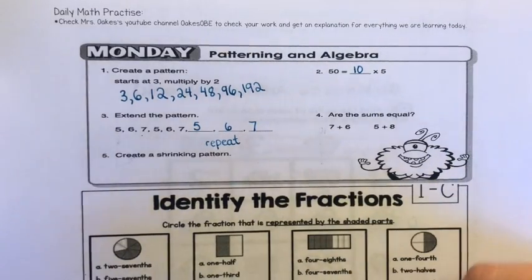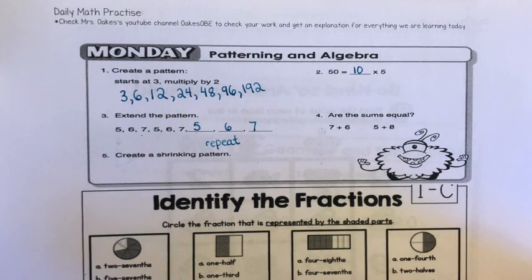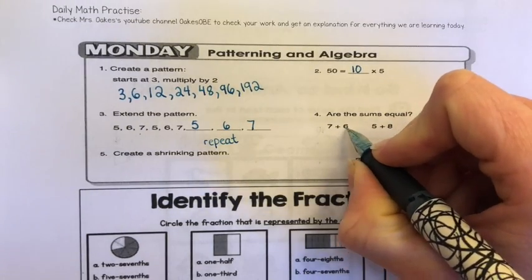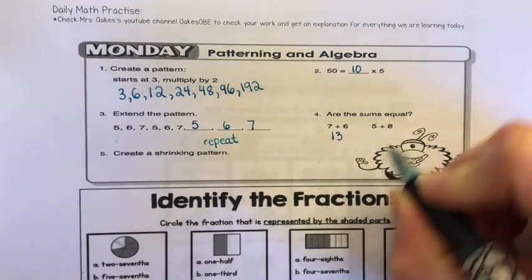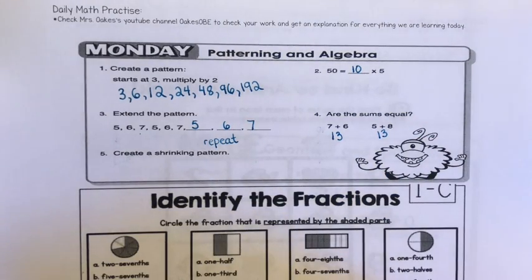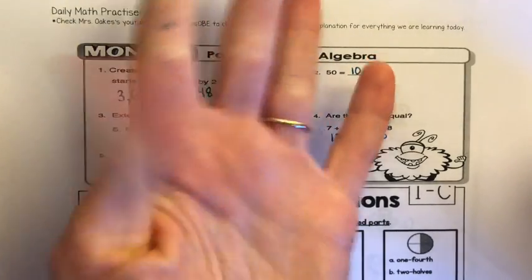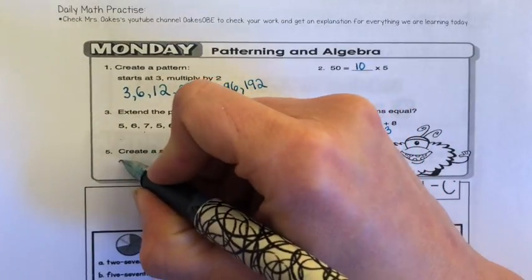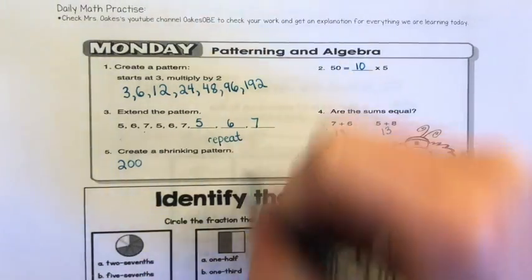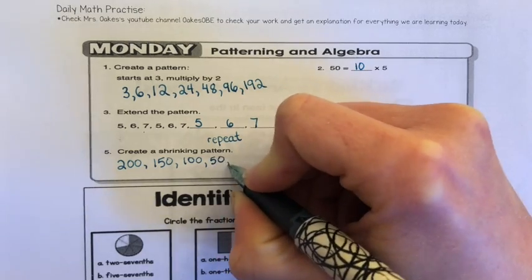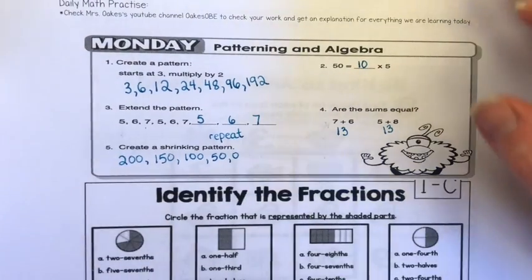I put something stickier underneath so it should hold my camera on top of the pile of books balanced on a pen. Hopefully it's less distracting. So are the sums equal? Seven plus six. Five plus eight. You could think five plus five and three more, which is also 13. If you really want to check that, start at eight and count up: nine, 10, 11, 12, 13. See, you know it. Now create a shrinking pattern. With a shrinking pattern, you want to start big. Maybe I start at 200 and every time my pattern goes down by 50. So 200, 150, 100, 50, zero. Done. That is a shrinking pattern. Whatever you want to do for your shrinking pattern is perfect.